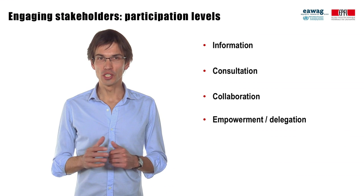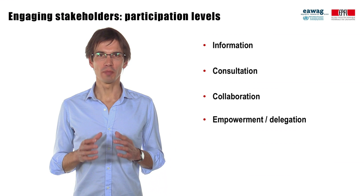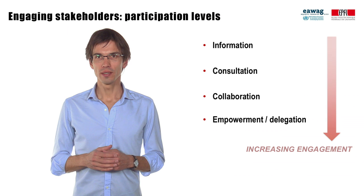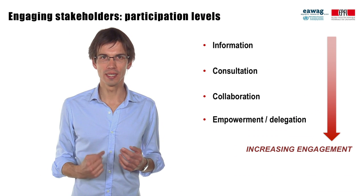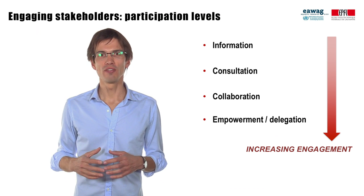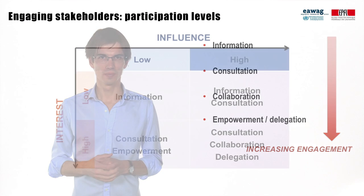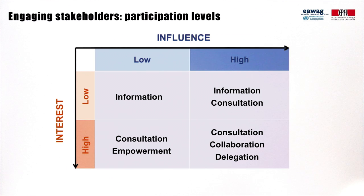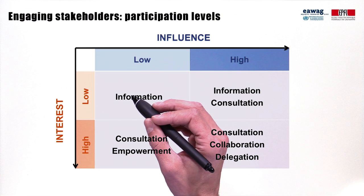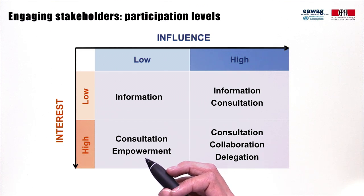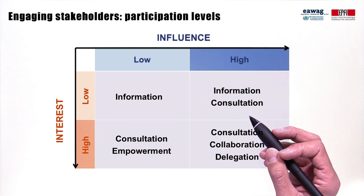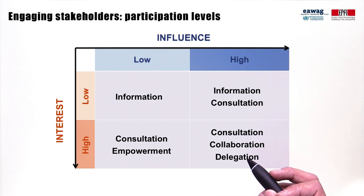Now, the question is how to engage these stakeholders. First, we need to define the level of participation. There are four main ones: Information, which goes one way — you give information to someone. Consultation, which goes two ways — you ask people for their opinion. Collaboration, where you develop your project together. And finally, empowerment or delegation, where you give power to the others. In a simplified approach, we can identify appropriate participation levels based on the influence-interest matrix. Stakeholders with low interest and low influence just need to be kept informed. Those with low influence and high interest need to be consulted and sometimes empowered. Those with low interest but high influence need to be informed or consulted. Those with high interest and high influence would be targeted for consultation, collaboration, or even delegation at the end of the process.